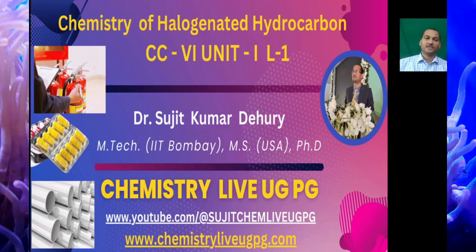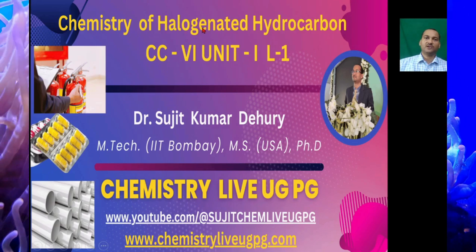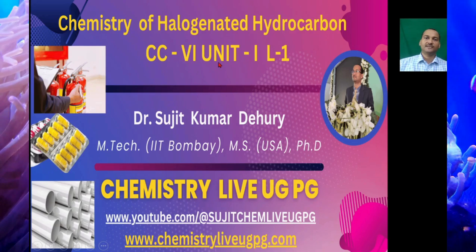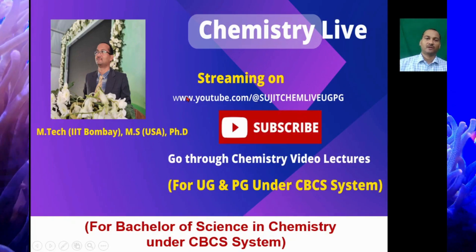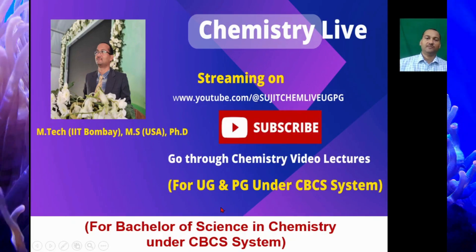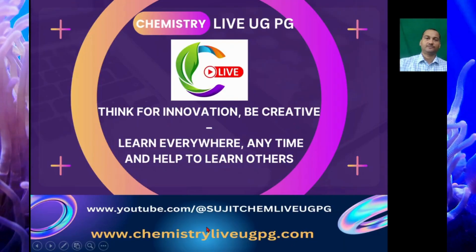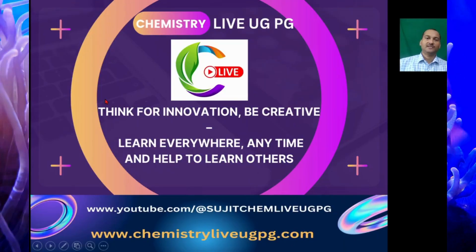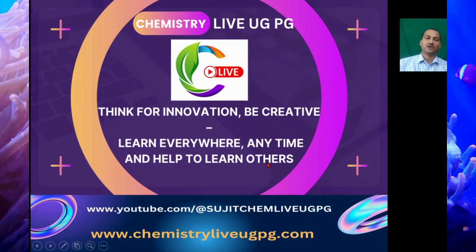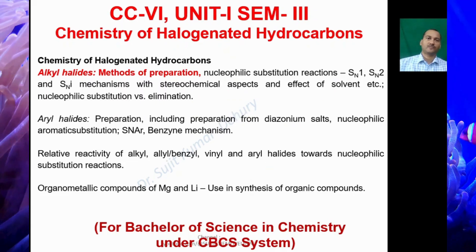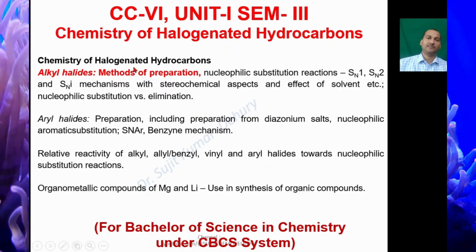Hi guys, welcome back to YouTube channel Chemistry Live UGPG. Today we are going to talk about chemistry of halogenated hydrocarbons, CC6 unit 1 lecture 1. This will be highly beneficial for BSc chemistry students under CBCS syllabus. Today we are going to talk about alkyl halides methods of preparation.